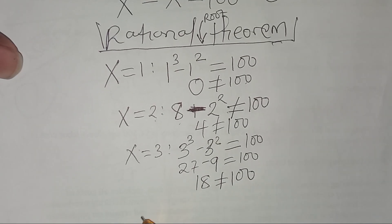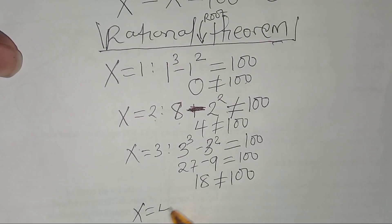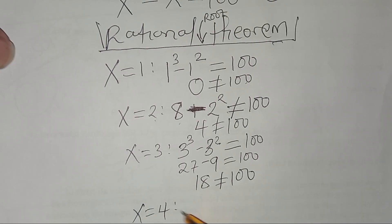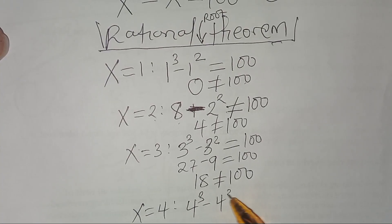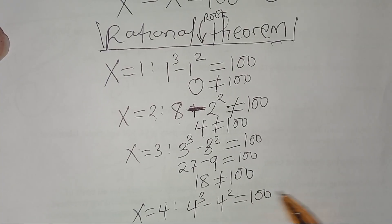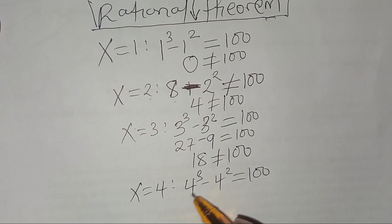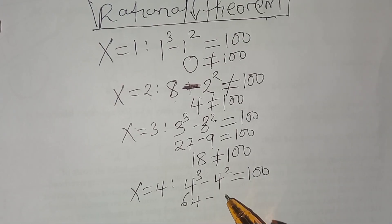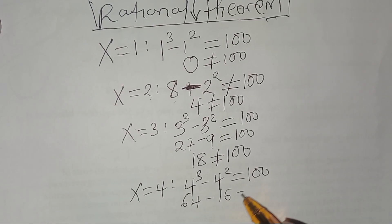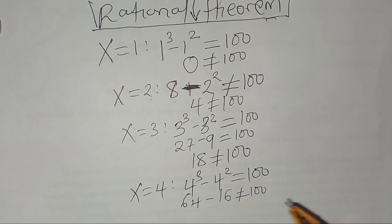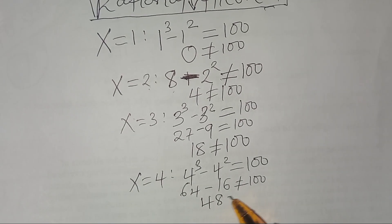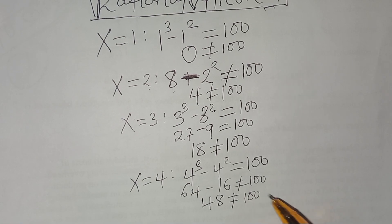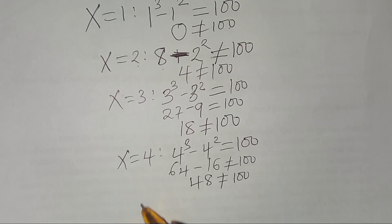So again, we move to x equal to 4. Let's check if x equal to 4 satisfies the equation. We'll have 4 cubed, subtract 4 squared, and check if this equals 100. Now 4 cubed is 64, subtract 4 squared which is 16. So 64 minus 16 equals 48, and 48 is not equal to 100.